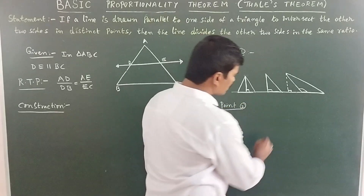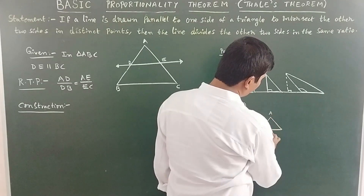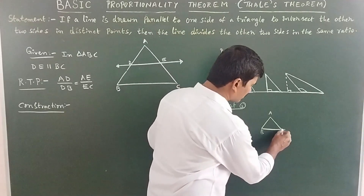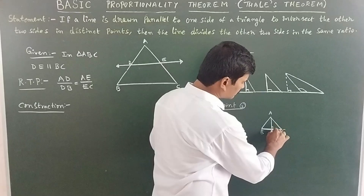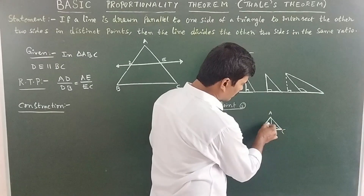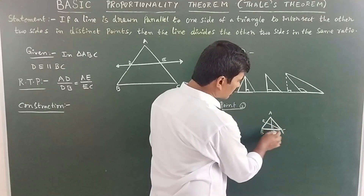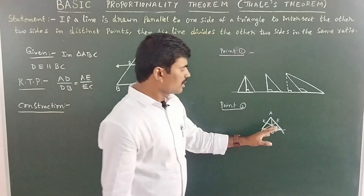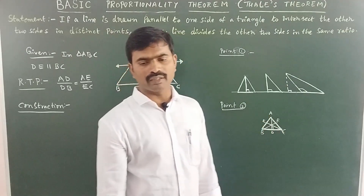Point 2: For any triangle ABC, different sides can serve as the base with different corresponding altitudes. If BC is the base, the height is AD. If AB is the base, the height is CE. If AC is the base, the height is BF. So for every triangle, each base has a different corresponding altitude.